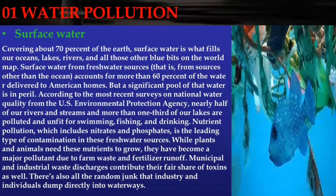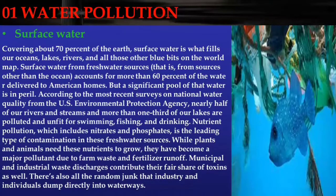Nutrient pollution — which includes nitrates and phosphates — is the leading type of contamination in fresh water sources. While plants and animals need these nutrients to grow, they have become a major pollutant due to farm waste and fertilizer runoff. Municipal and industrial waste discharges contribute their fair share of toxins as well, along with random junk that industry and individuals dump directly into water.